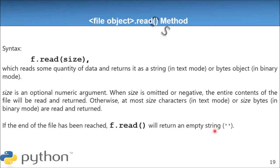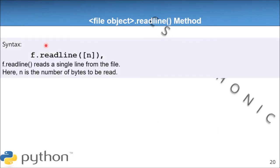Next is the readline method. The readline method is used to read a single line from the file. The syntax is again: you mention the file object, then call the readline method. The parameter n is optional here. If you don't mention the value of n, it reads and displays the complete line. The n is the number of bytes to be read.